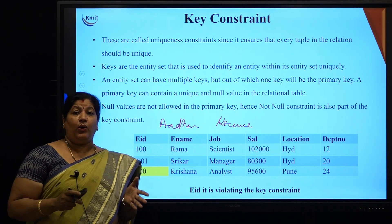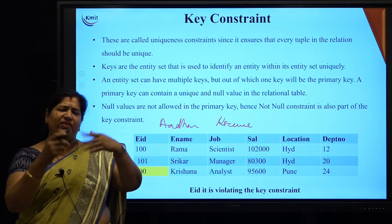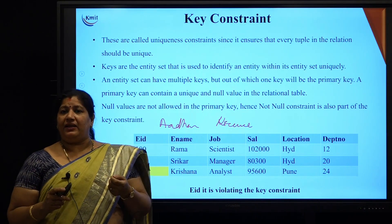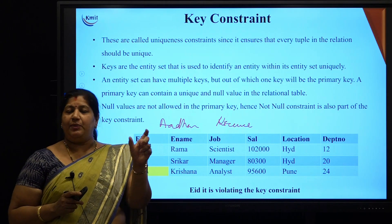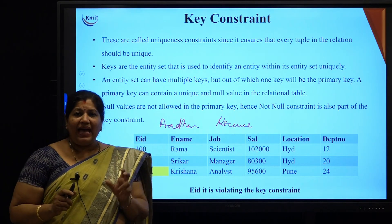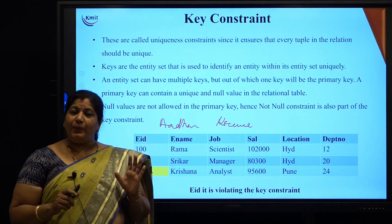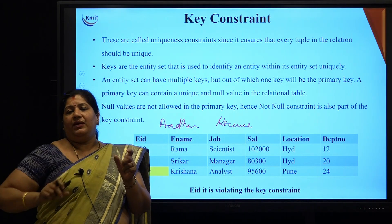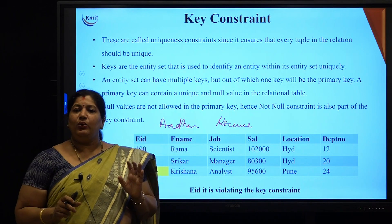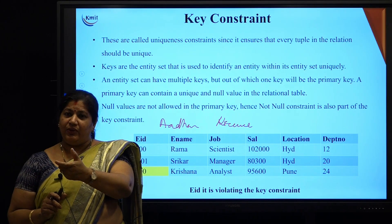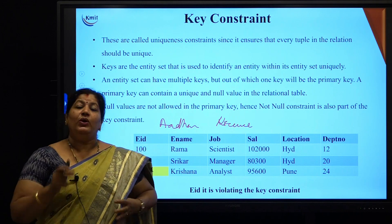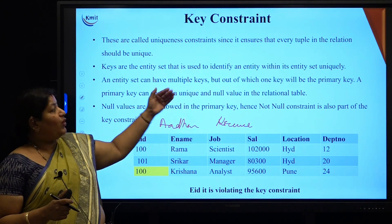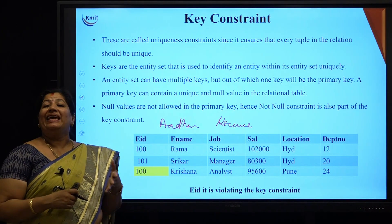There can be a composite value also — it need not be a single attribute, it can be a combination. For example, in a supermarket, you have product type and product name. Soap can be Lux, Lyril, Santoor, etc. The product name and product type category can together make it unique. The same brand Santoor may have a powder and a soap, so product type and product name together can uniquely identify that. We call these candidate keys.